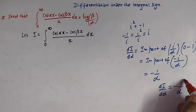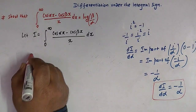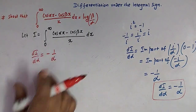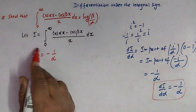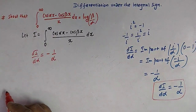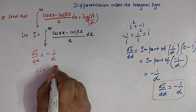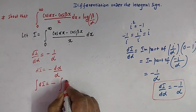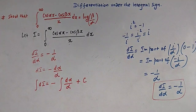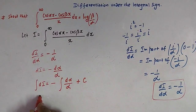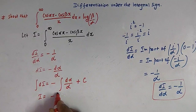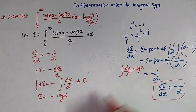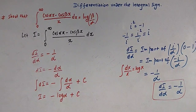We have now obtained the differential equation dI/dα = -1/α. This is a variable separable differential equation and can be easily solved by separating the variables. We can write dI = -dα/α. Integrating both sides, we get I = -log α + c, where c is the constant of integration, since the integral of dx/x is log x.